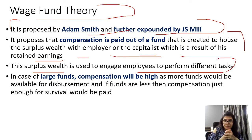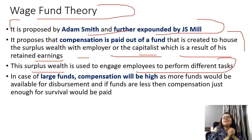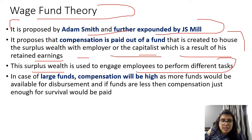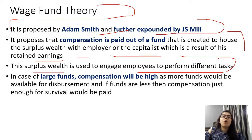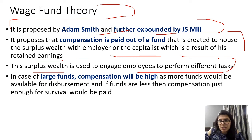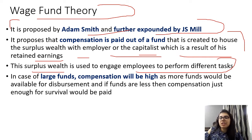If there would be larger funds available in abundance, then obviously the resultant compensation will be high, as more funds would be available for disbursement. If funds are less, then only enough compensation for survival would be paid. So if an employer has a lot of funds, they can pay more salaries and wages. This is the Wage Fund Theory, proposed by Adam Smith and further expounded by J.S. Mill.